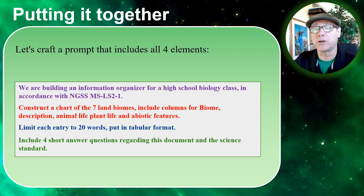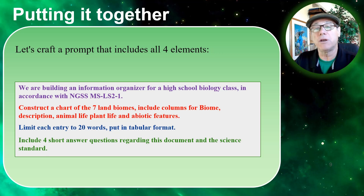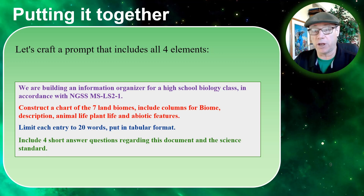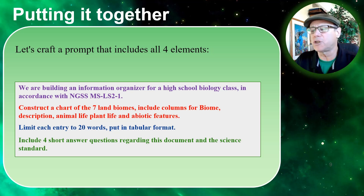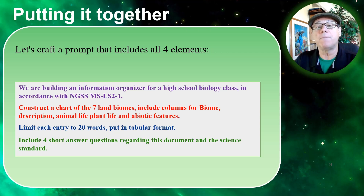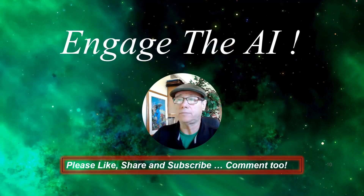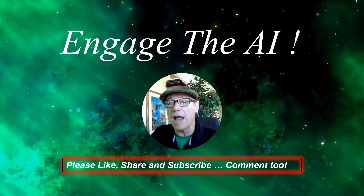Now let's look at the modifiers: limit each entry to 20 words — you don't want a big chunk in an organizer — and put it into tabular format. I probably could have figured this out because I used the word chart earlier, but this just emphasizes I want this in a chart format. And then lastly, the additional guidance: include four short answer questions regarding this document and the science standard. So this is going to put together a prompt that makes me an organizer for my biology class. Let's go ahead and engage the AI and see how this prompt looks.